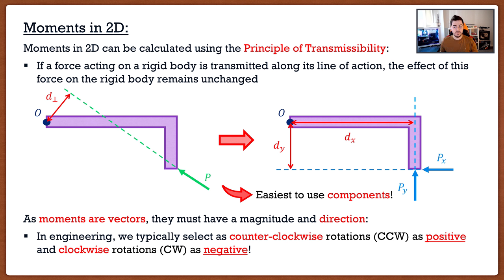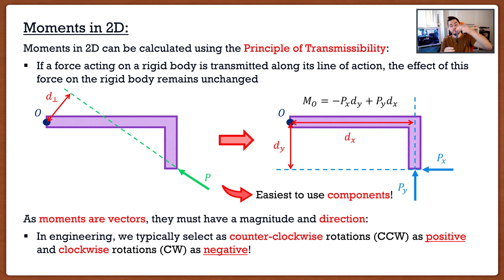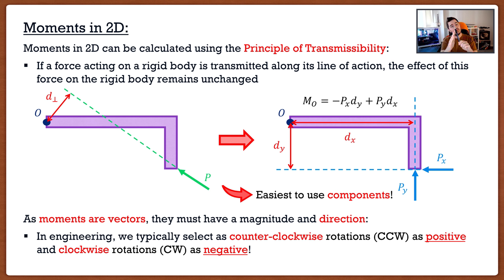So if I were to take the moment about point O using both components, I get: negative Px times dy, because Px causes clockwise rotation, plus Py times dx, because Py causes counterclockwise rotation. That sign convention is what you need to worry about — other than that, moments are actually that simple.